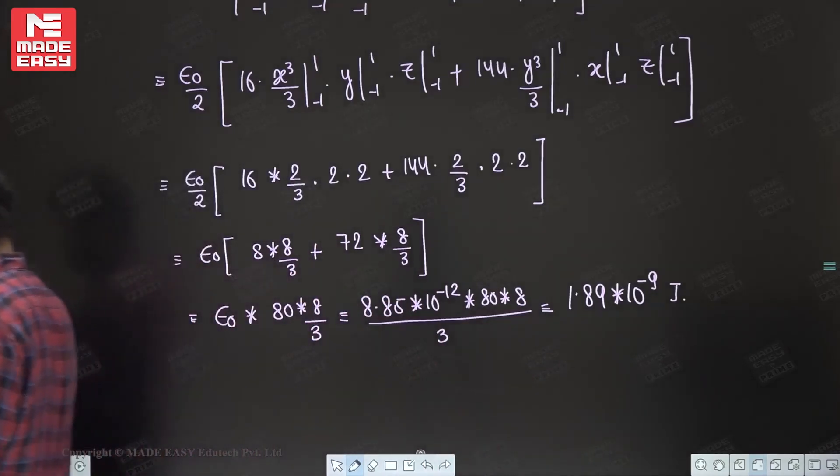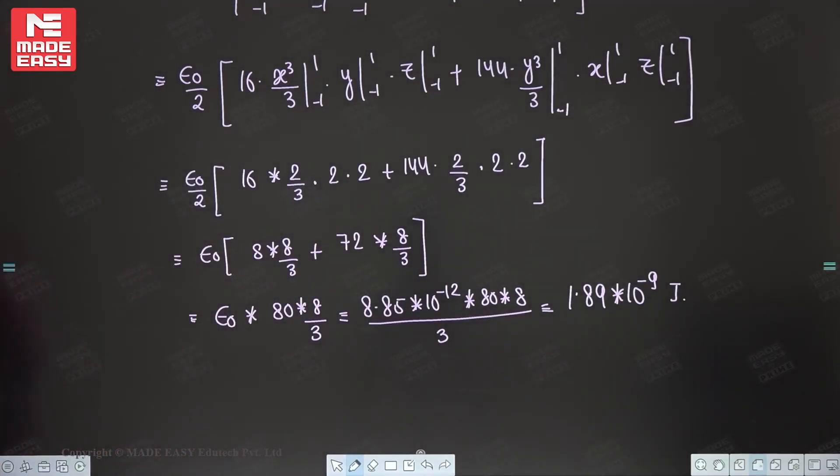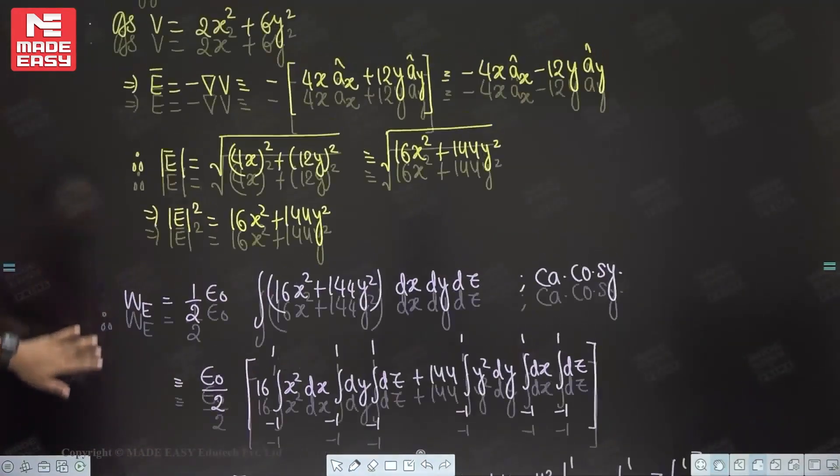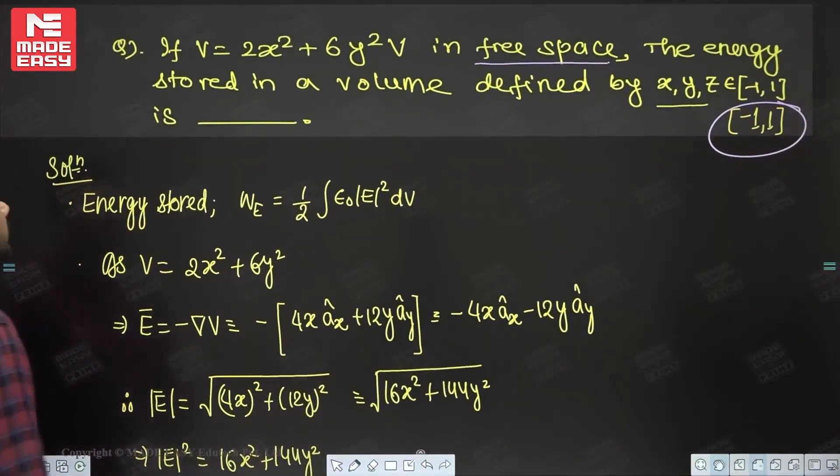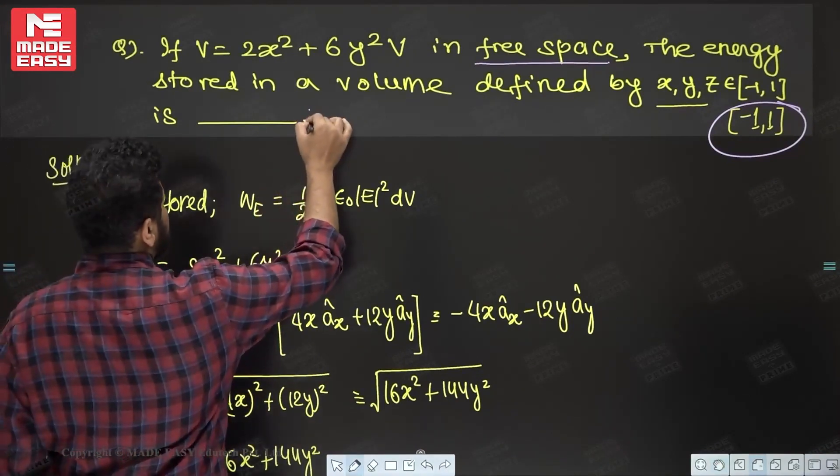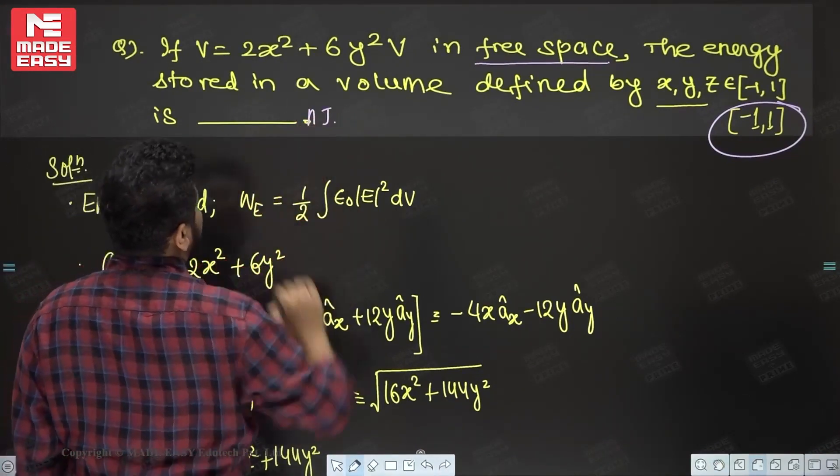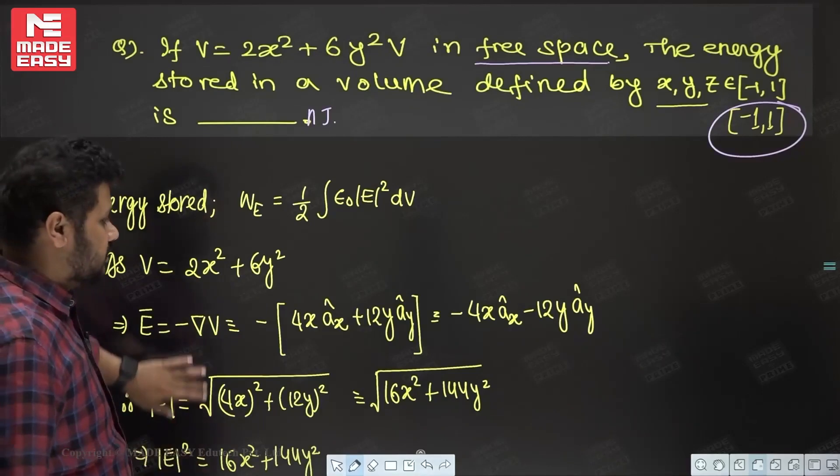So answer is 1.89 kind of. They are asking what is the unit they have given. I think they have not given the unit. It should be in some nanojoule. Because if it is your nano, that means it should be nanojoule.